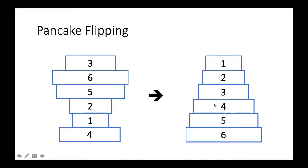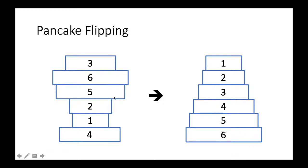The first example: we have n pieces of pancakes of different shapes. Some are larger, some are smaller, so we use a number to represent the relative size of each pancake, listed from 1 to n. The goal is to perform some operations so that the pancakes will be sorted from small to large, from top to bottom.